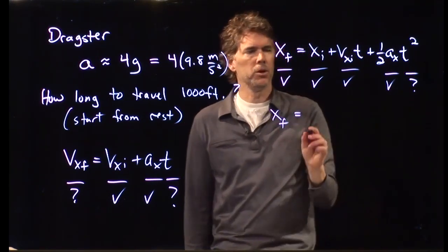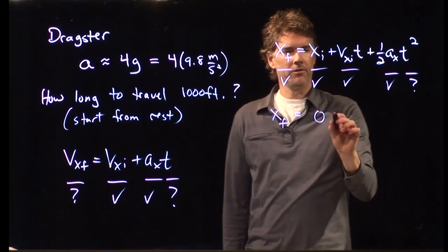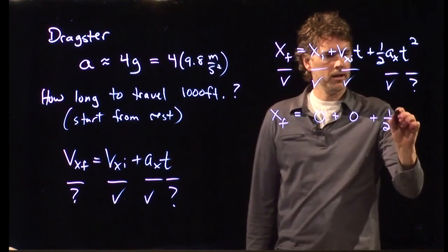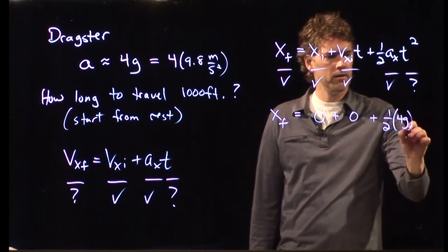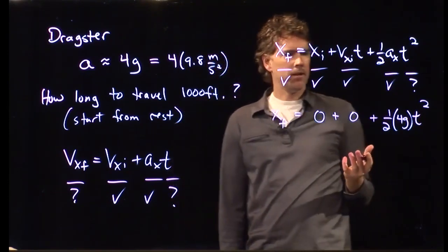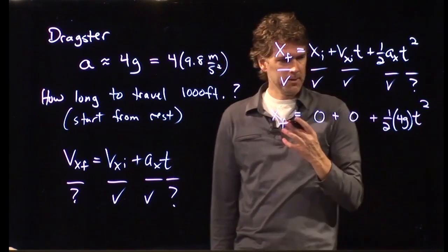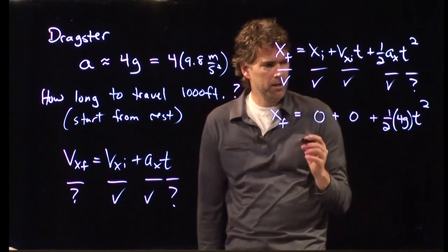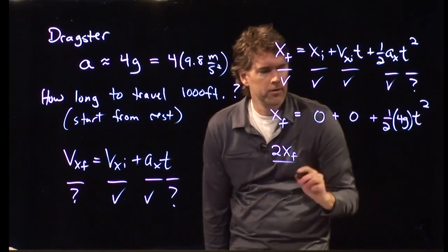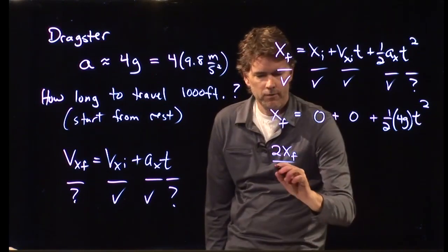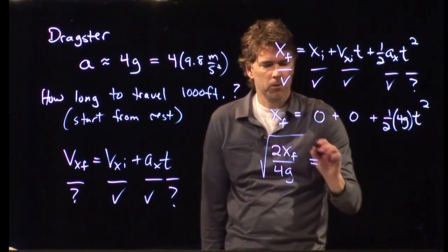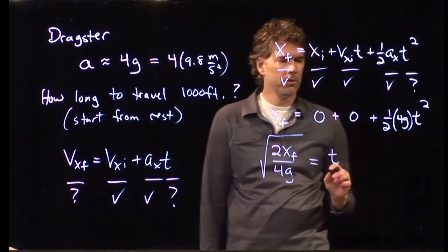So, let's just rewrite this, and let's create some of the zeros. Start at zero, start at rest, accelerate at 4 G. And now we can just solve this thing for t. And you can double-check my math. But I would say that we get the following. So, 2xf over 4 G square root is equal to t.